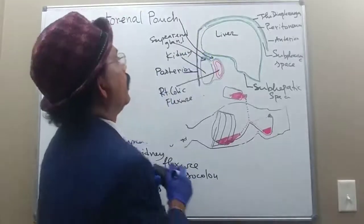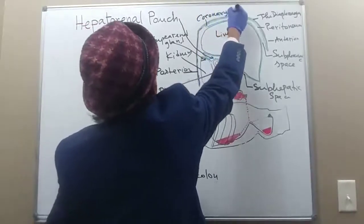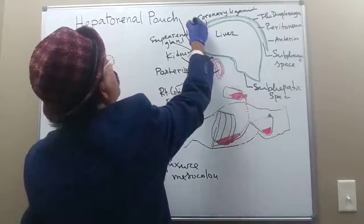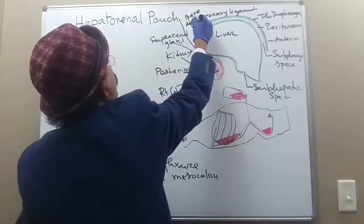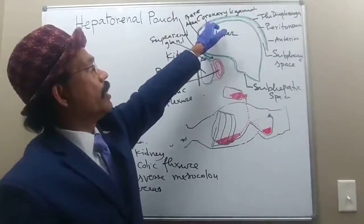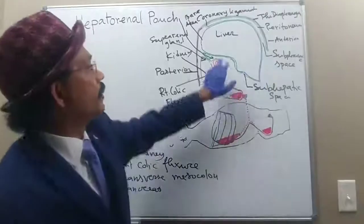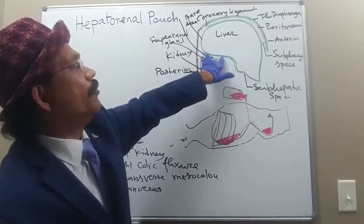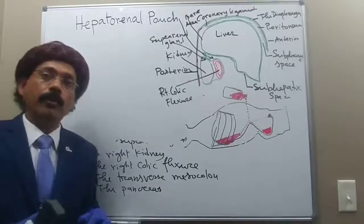This is the anterior part of the coronary ligament, and here is the bare area — B-A-R-E — the bare area of the liver. This is the superior coronary ligament, this is the sub-hepatic space, the sub-phrenic space, and the hepatorenal pouch or Morrison's recess is here — this is a potential space that will contain fluid when there is pathology.